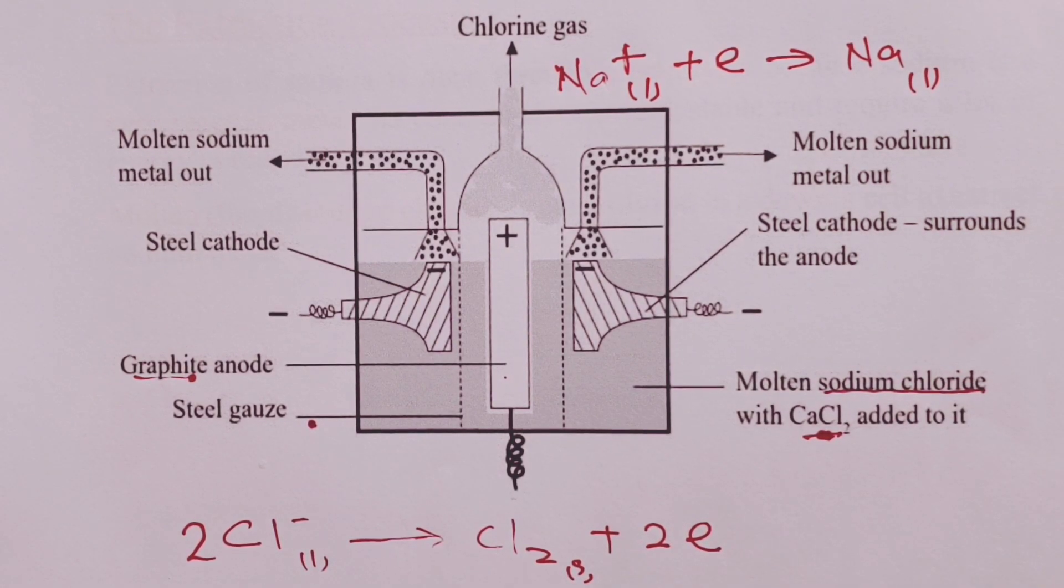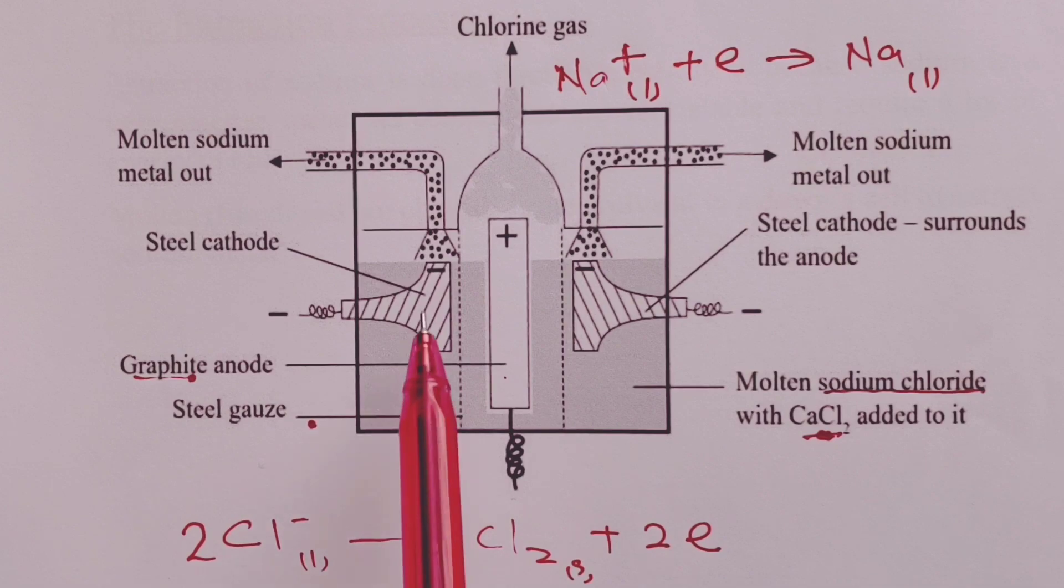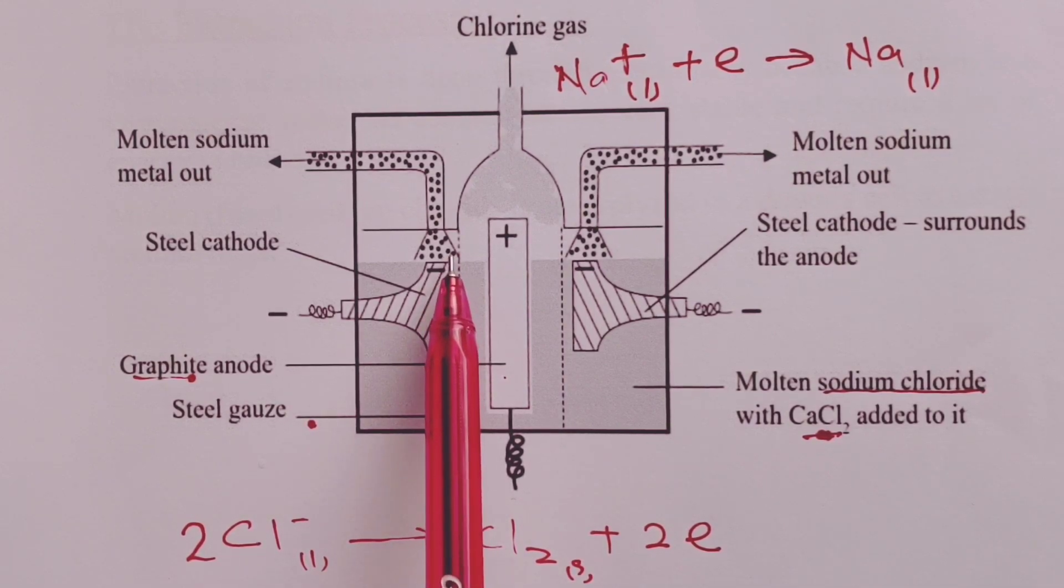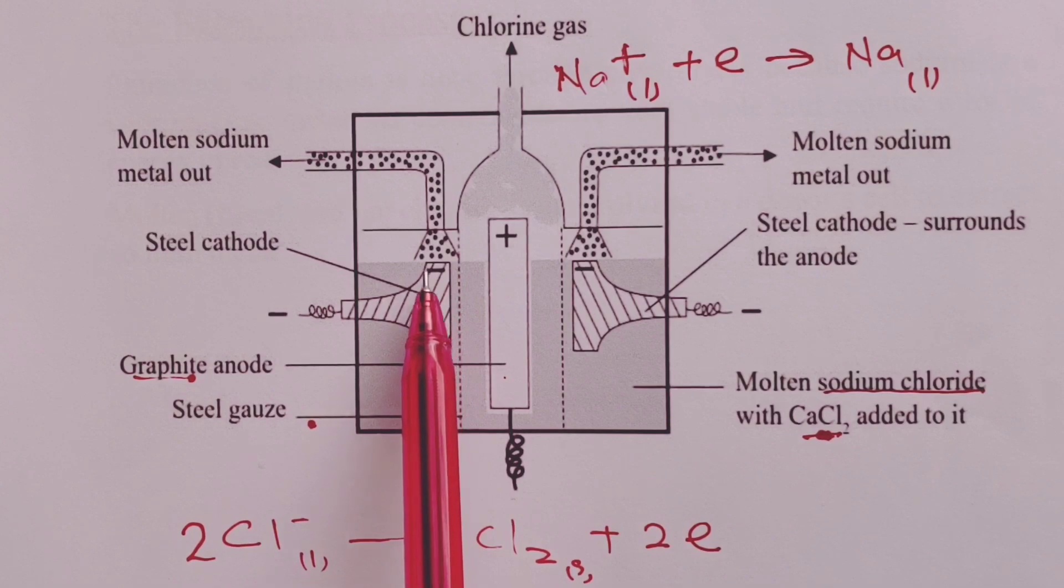Usually when we are writing equations for discharge at anode and cathode, we insist on writing them to the simplest ratio. Now liquid sodium is floating on the denser molten salt mixture, as we can see here.